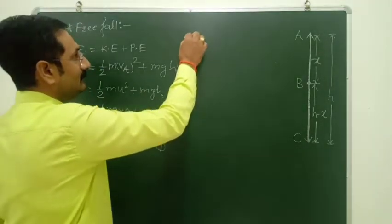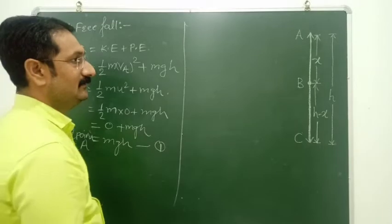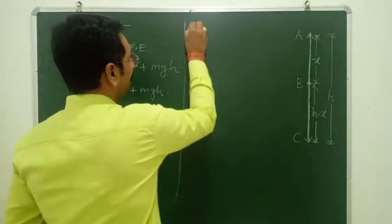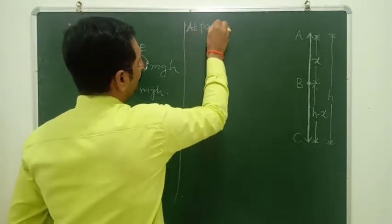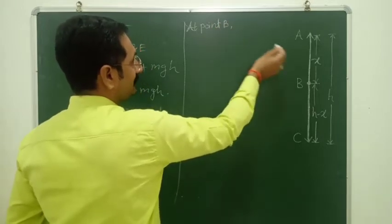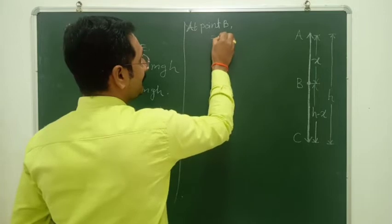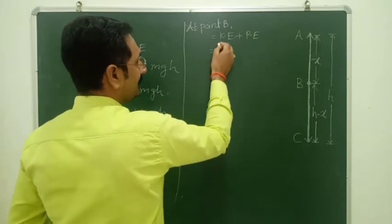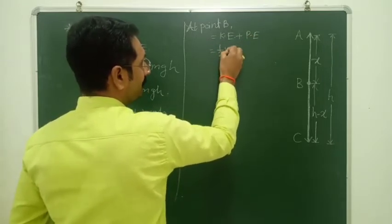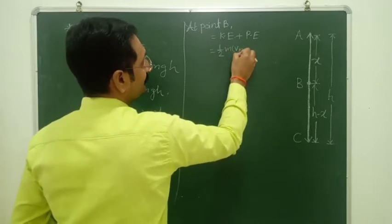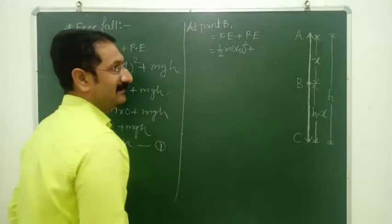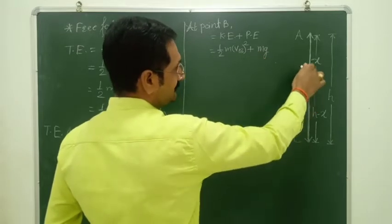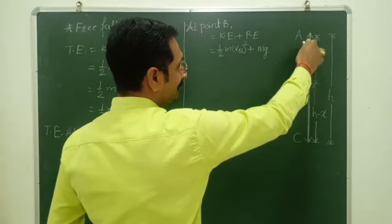Now let's study the total energy at point B, when the object comes to point B. Total energy = kinetic energy + potential energy = one-half m·(velocity at B)² plus potential energy m·g·(H minus x), where x is the displacement from A to B.